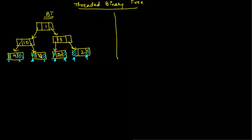We can utilize this space in an effective way. We can make these empty spaces point to some other node. But the question is what is the best way to utilize this space — we cannot just make these empty pointers point to any random node. To get benefit from these free spaces, we created the concept of threaded binary tree, where we utilize the spaces storing null.